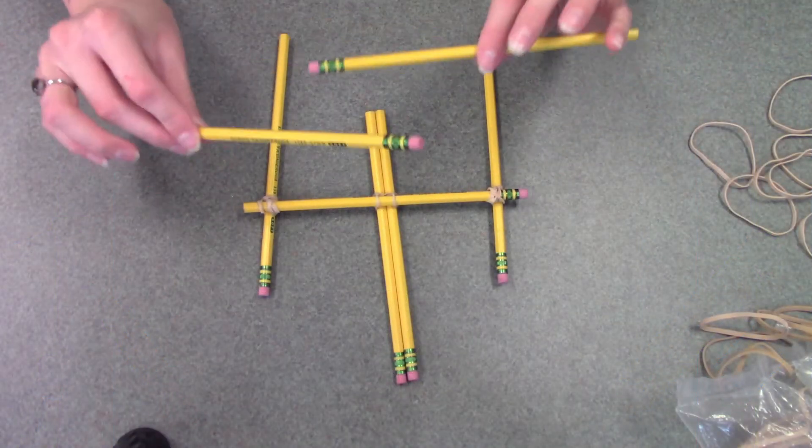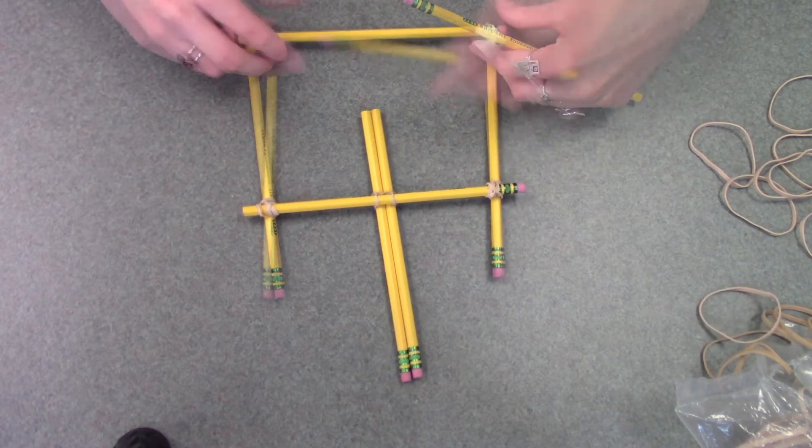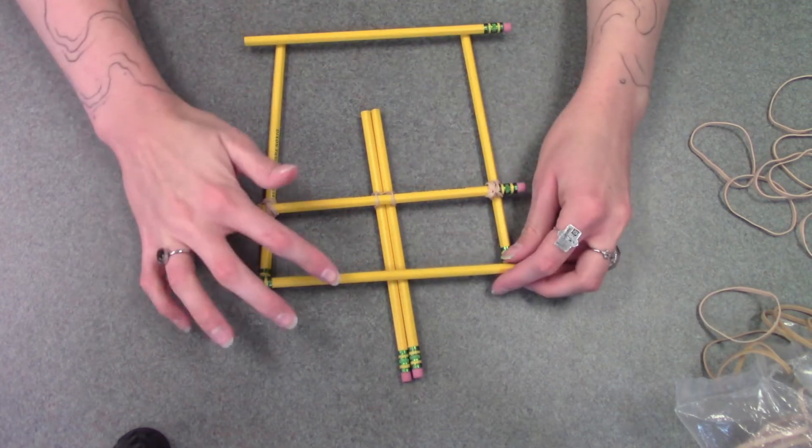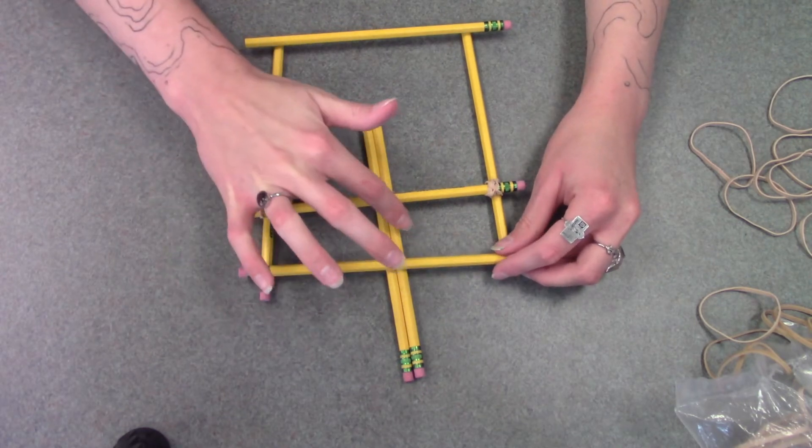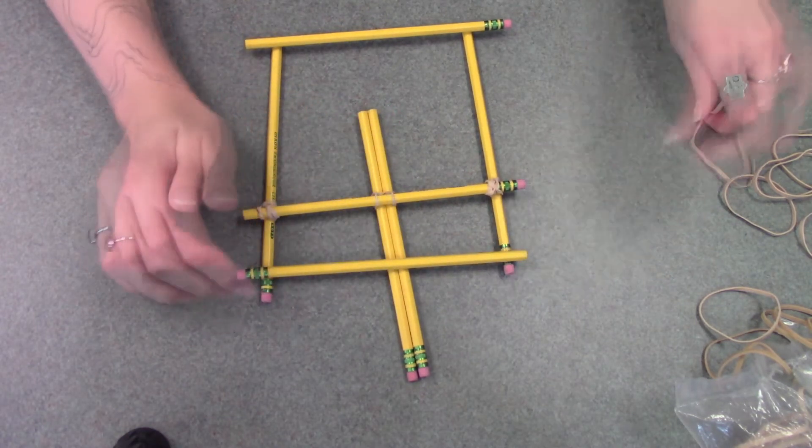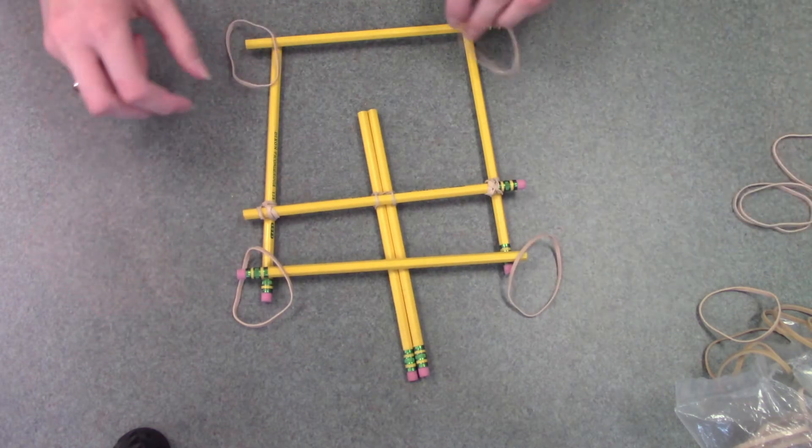Then you're going to take two more pencils and put one on the bottom here and one on the top. Make sure that both of these are in front of the back two pencils here. And you're just going to connect it there, there, there, and there.